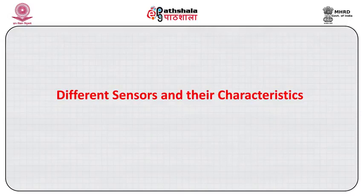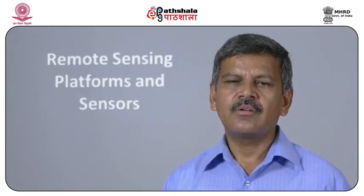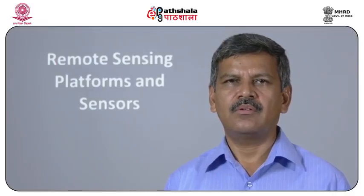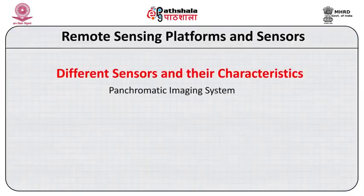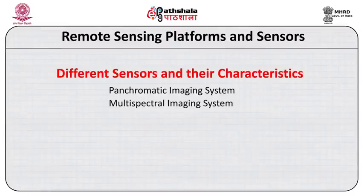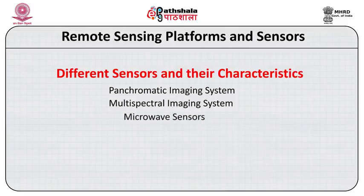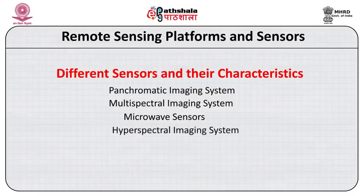Now come to the different types of sensors used for scanning the earth surface. These are of the following types: panchromatic sensors, also known as pan, which extract information in black and white; multispectral sensors, which scan the object or earth surface in different colors or bands; microwave sensors; hyperspectral sensors; and thermal sensors, which scan the temperature of the earth surface.